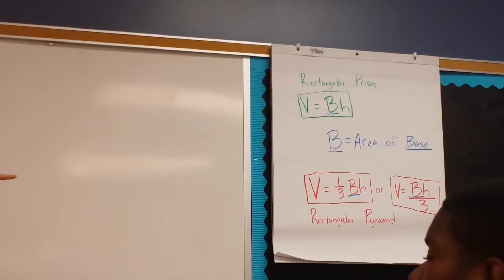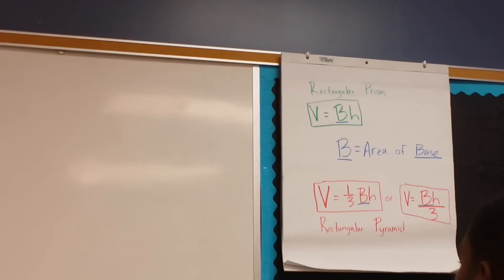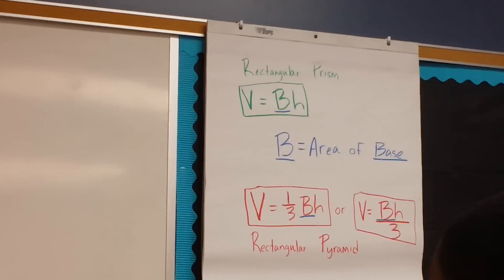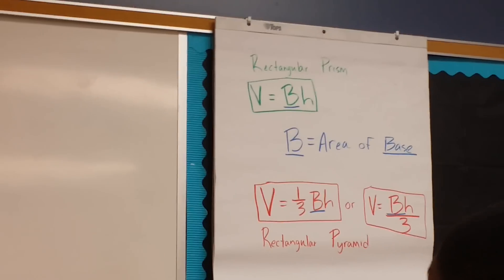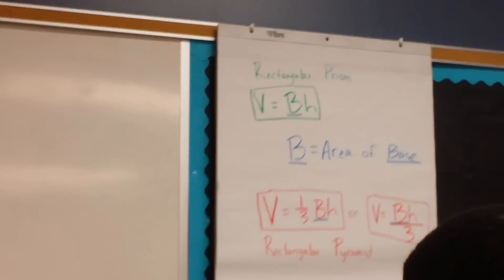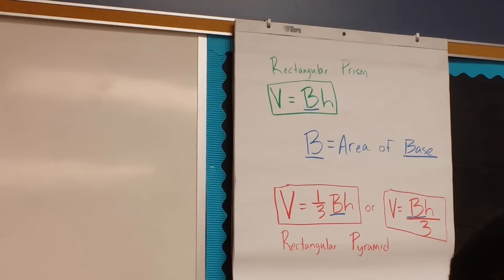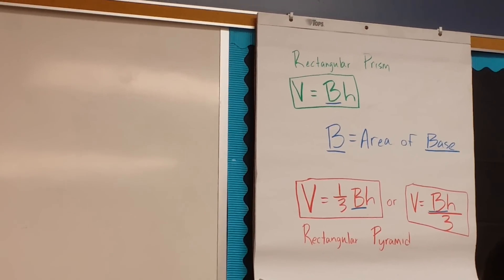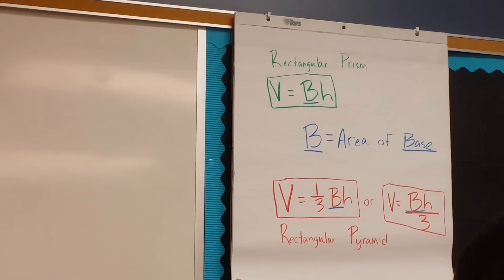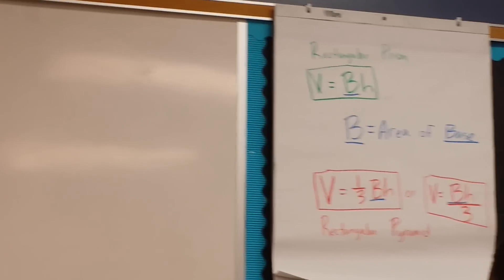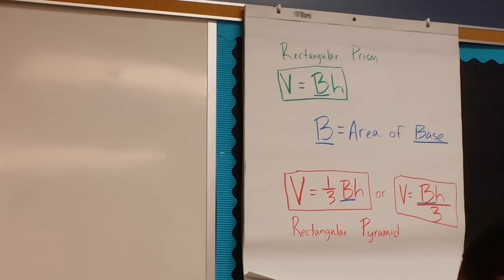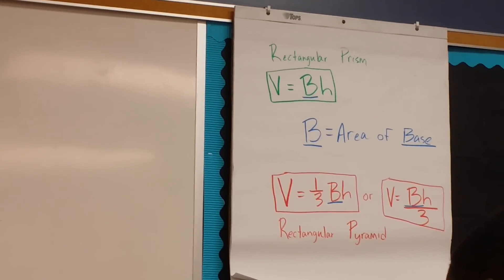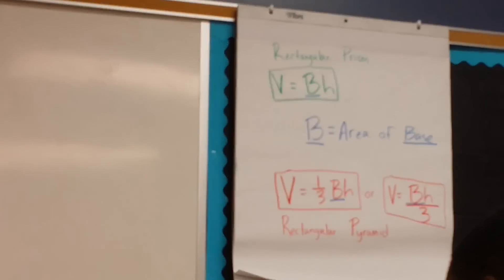They both have base and height, because both of them have big B times H. But what does the pyramid have? The pyramid has base and height, but also one-third. So that's the only difference — they both have big B times H, but the pyramid has one-third.